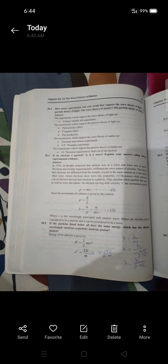The experiments which support the wave theory of matter are Davison and Germar experiment and GP Thompson experiment, which you have studied in this chapter. The experiments which support the particle theory of matter are JJ Thompson experiment to find e/m of an electron.